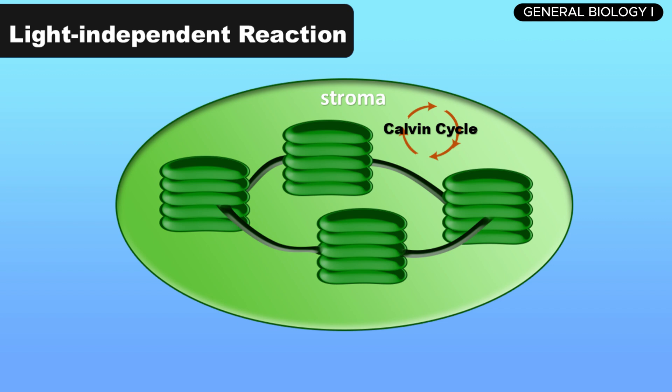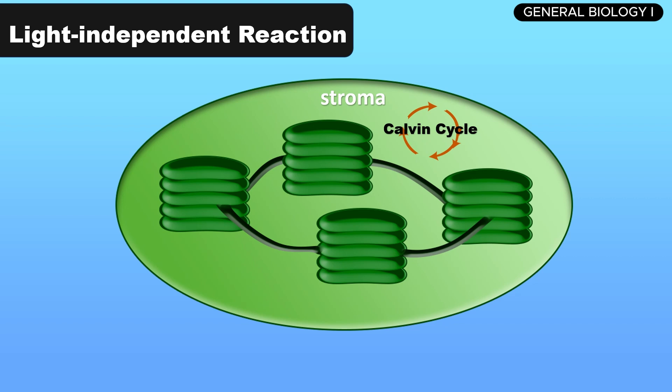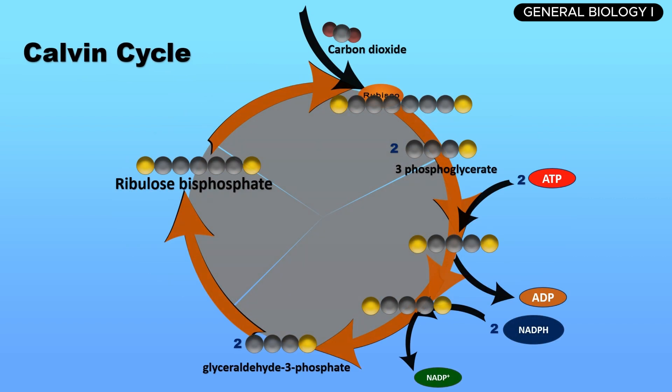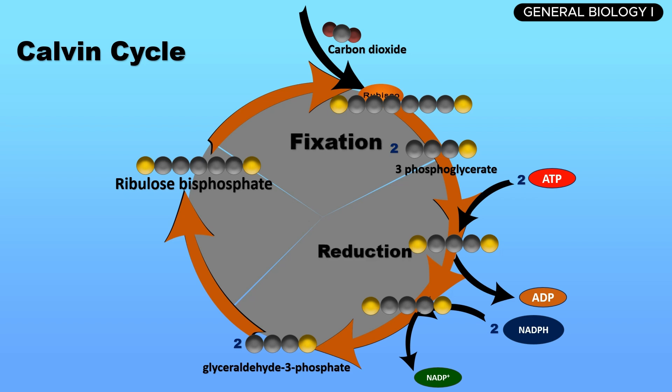The light-independent reactions, also known as the Calvin cycle, occur in the stroma of the chloroplast and don't require light to take place. Instead, they use the ATP and NADPH generated in the light-dependent reactions to convert carbon dioxide into glucose. The Calvin cycle consists of three main phases: carbon fixation, reduction, and regeneration.